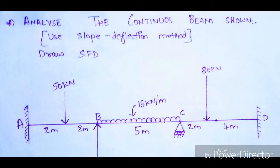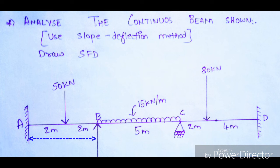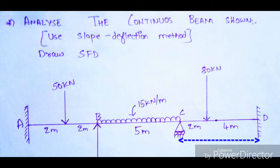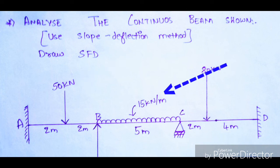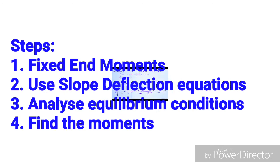Look at the problem: analyze the continuous beam shown in the figure using the slope deflection method and draw the shear force diagram. The beam has points A, B, C, D. Span AB is 4 meters, span BC is 5 meters, and span CD is 2 + 4 = 6 meters. There is a point load of 50 kN between A and B, a UDL of 15 kN/m between B and C, and a point load of 80 kN between C and D.